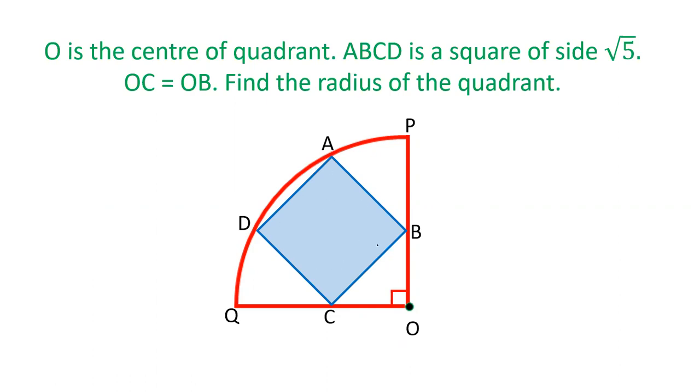Inside this quadrant there is a square ABCD such that B, C, A, and D all four points lie on two sides, two radii, and on the arc. It is also given that OC is equal to OB and the side of this square is √5. We have to find out the radius of this quadrant.